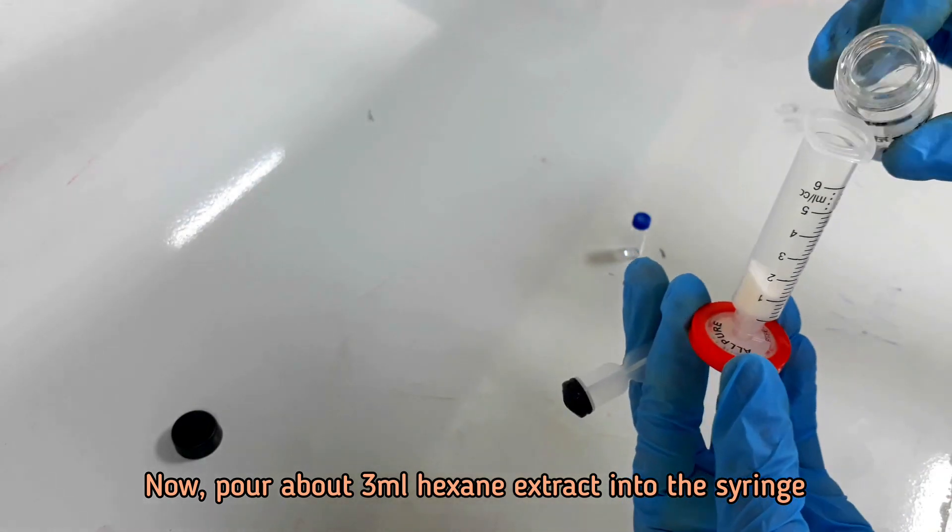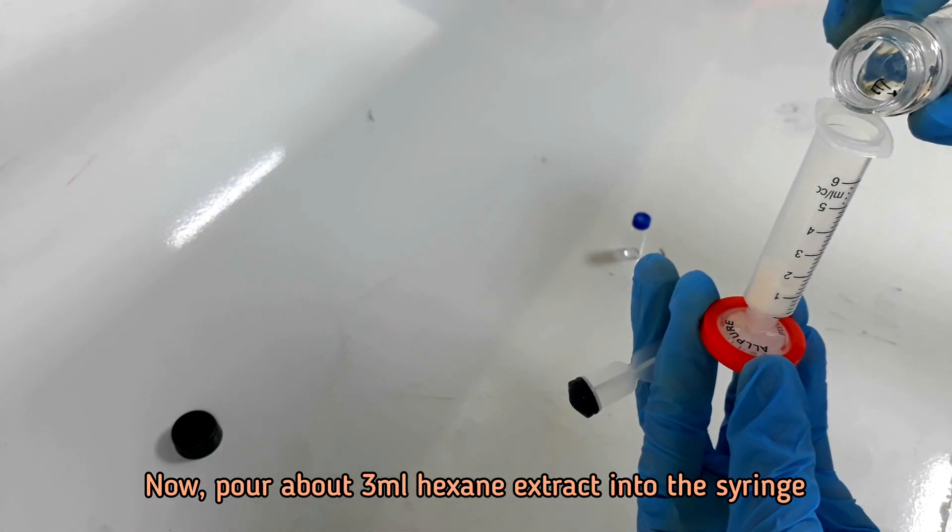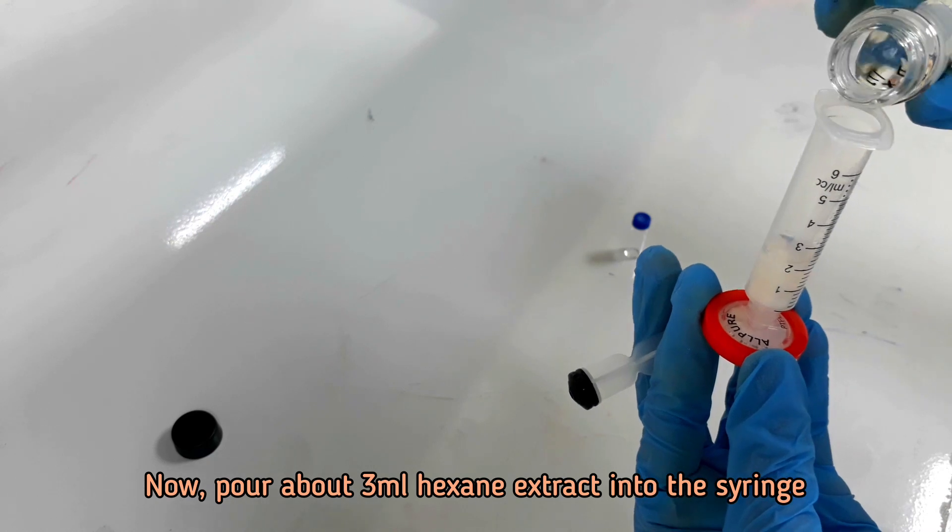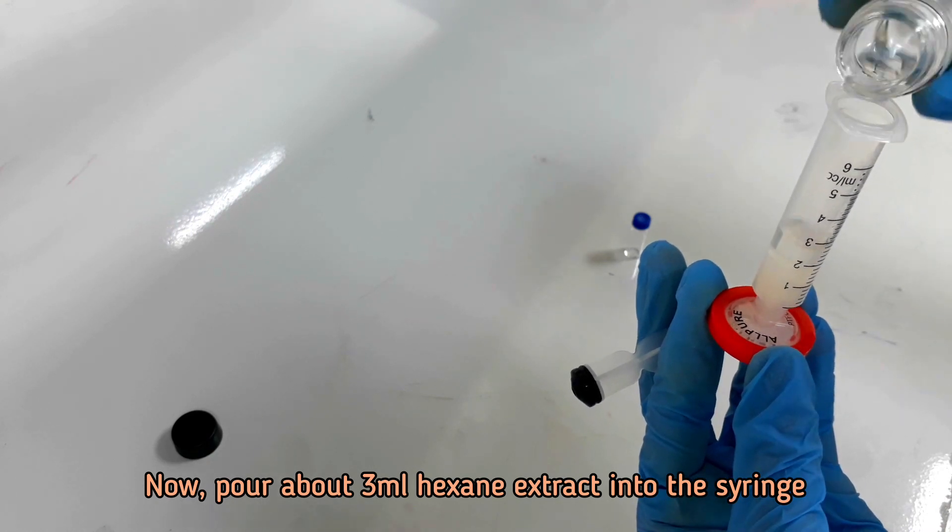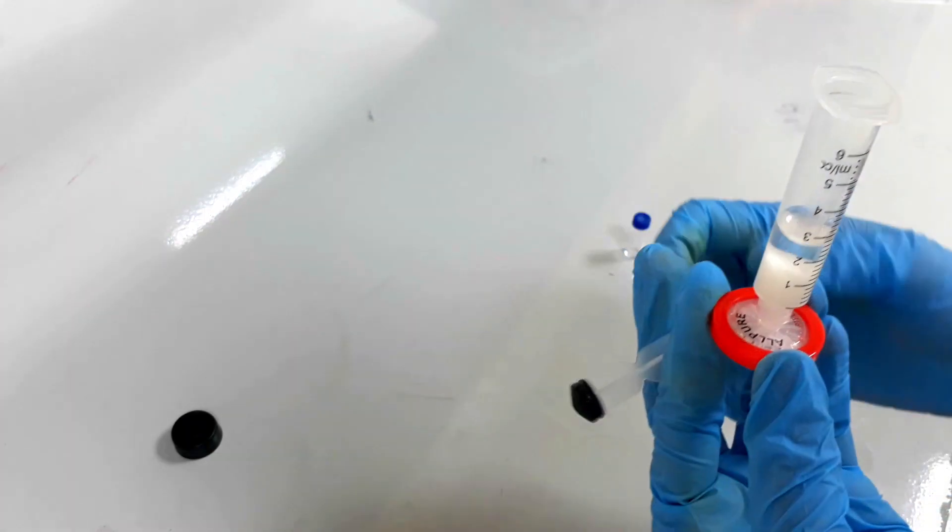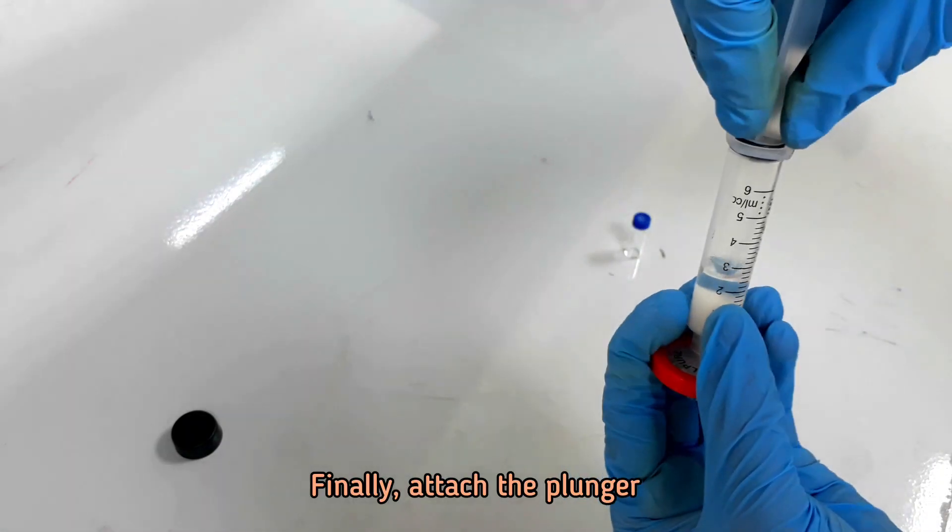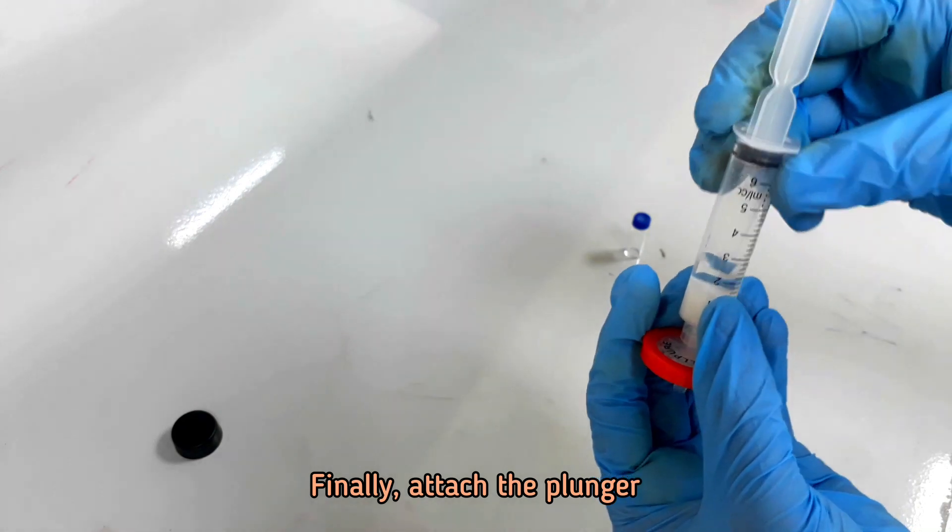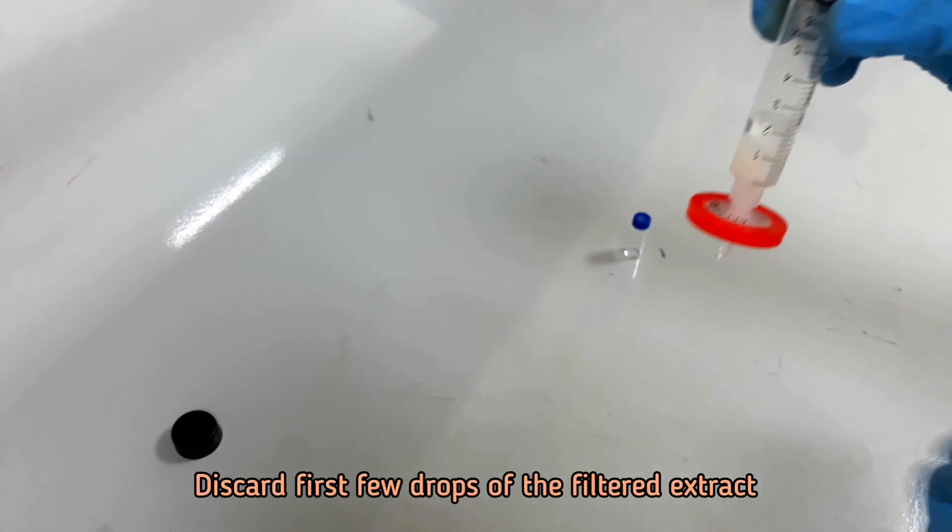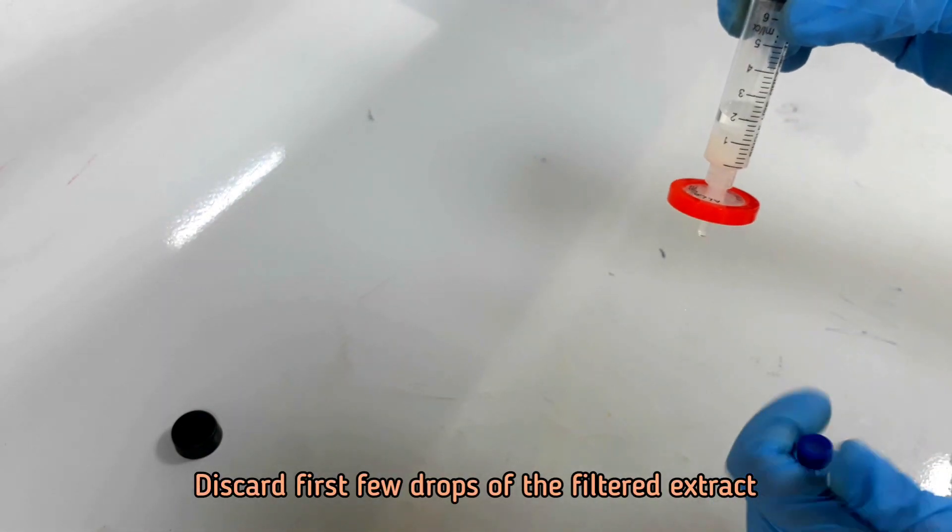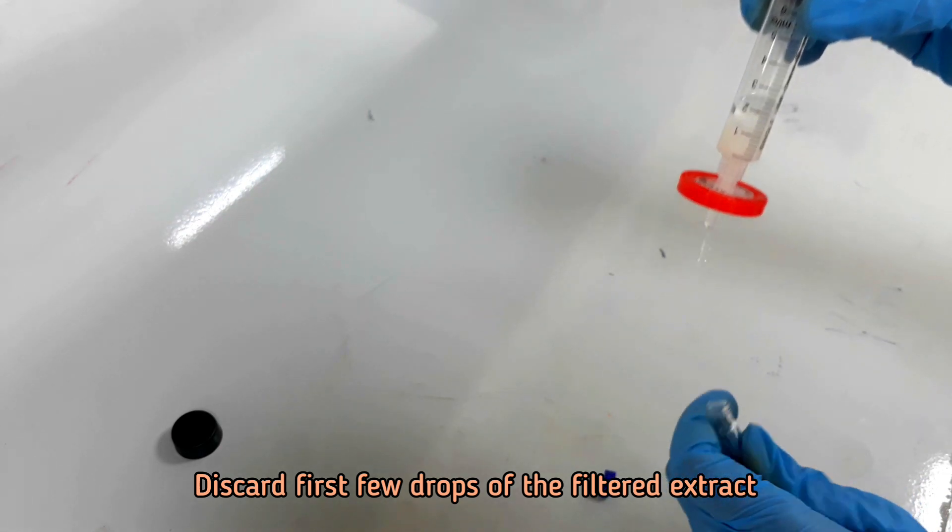Pour about 3 ml hexane extract into the syringe and insert the plunger. Discard first few drops of the filtered extract and then take about 1 ml into the injection vial.